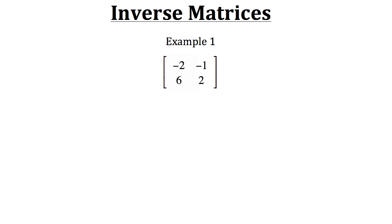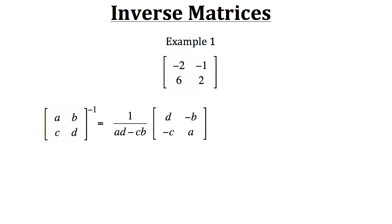Let's look at Example 1. We have a matrix and we want to find its inverse. Consider a formula that can help us: for a general matrix with elements a, b, c, and d, the inverse is 1 over the determinant multiplied by a second matrix. In that matrix, the a and d elements switch places, and the b and c elements take opposite signs.